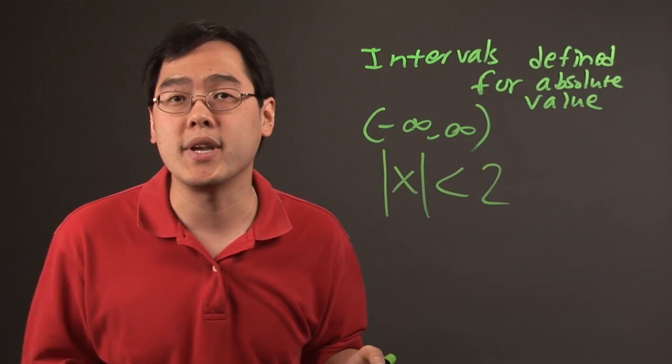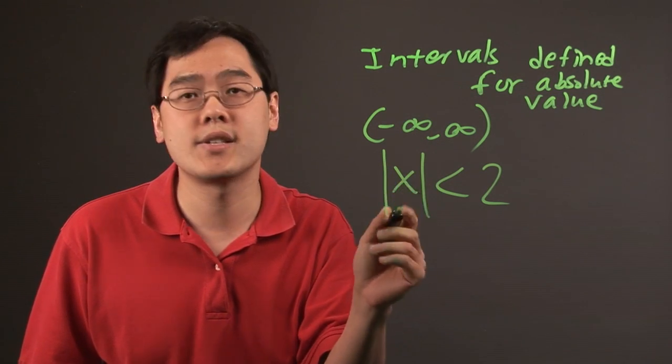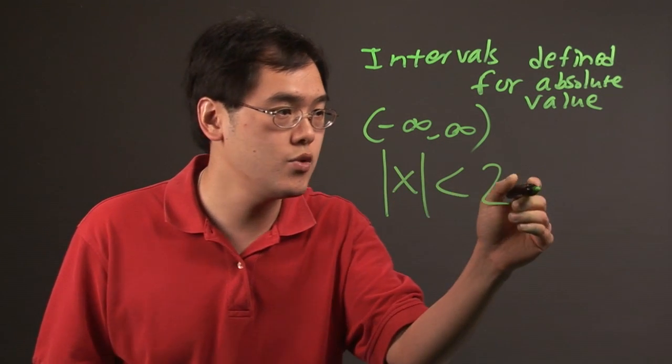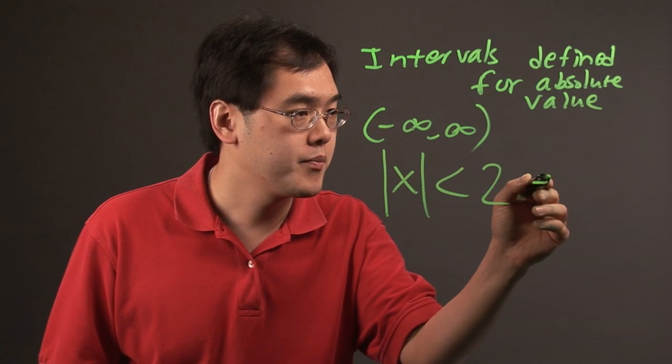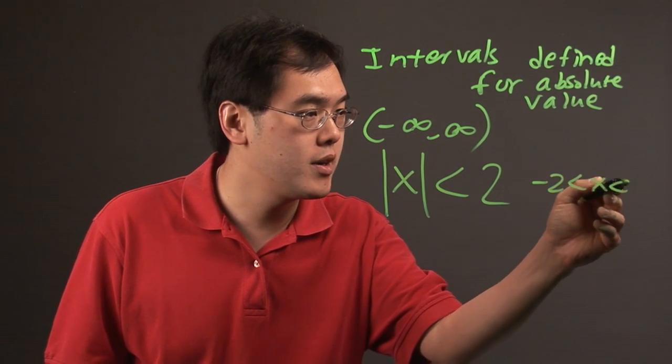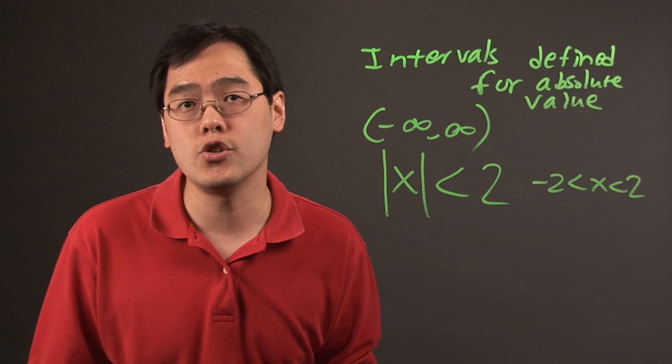Absolute value being a distance, you want to find the values of x whose distance is going to be less than 2. From algebra, this can be split apart and rewritten as x is between negative 2 and 2.